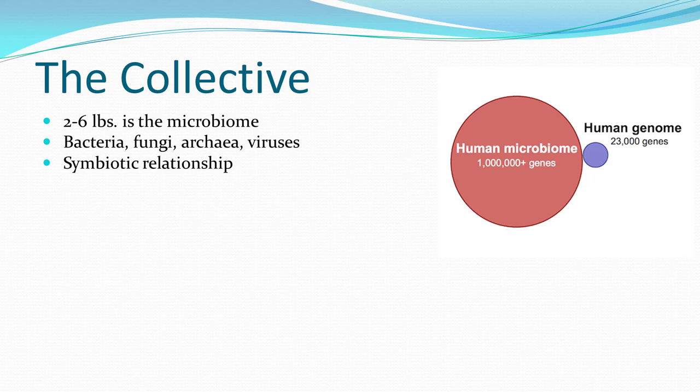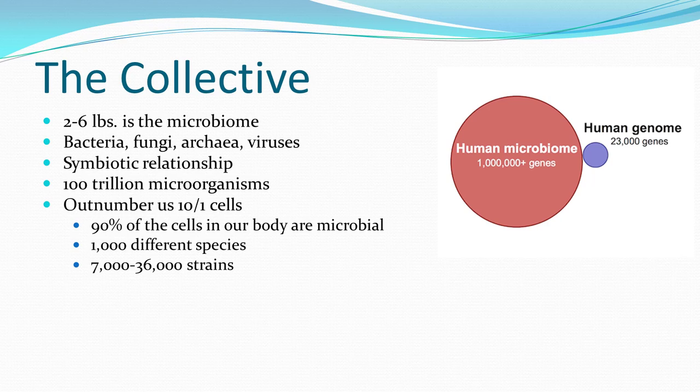We're talking about 100 trillion microorganisms. When you look at the number of cells in our body, there are probably 10 trillion — so we're outnumbered 10 to 1. Each of those 100 trillion microorganisms is a complete organism. Ninety percent of the cells we carry around are microbial — a thousand different species, seven to 36,000 different strains. They outnumber us 10 to 1 in genes, at least that much depending on the population at any given time.